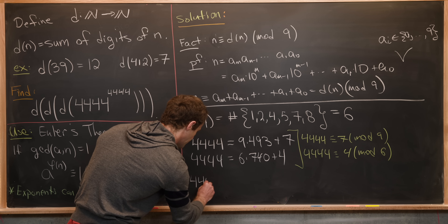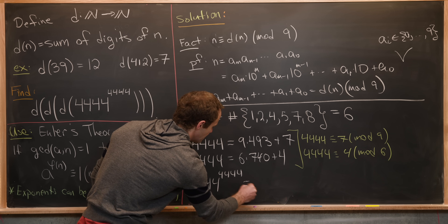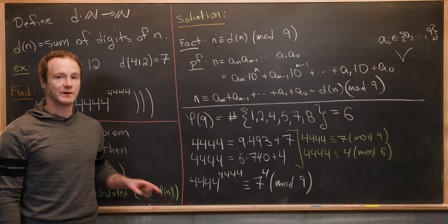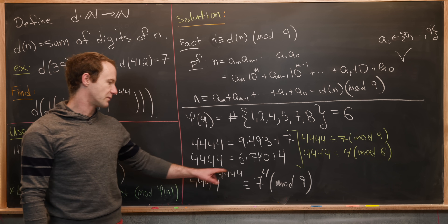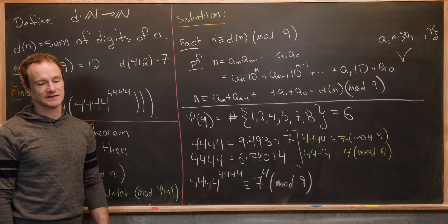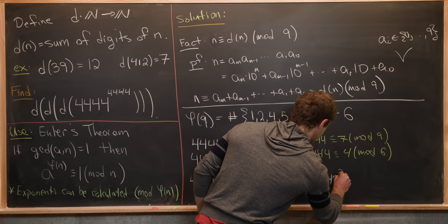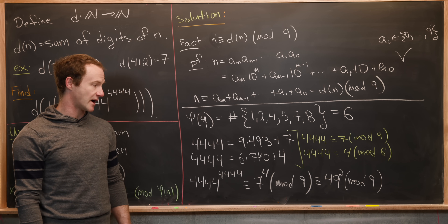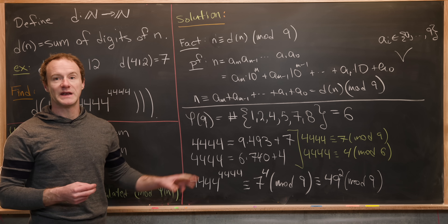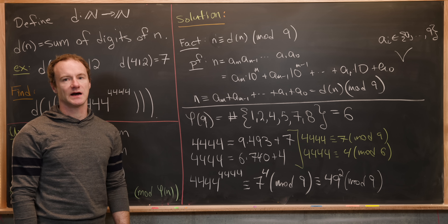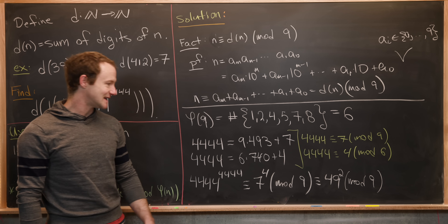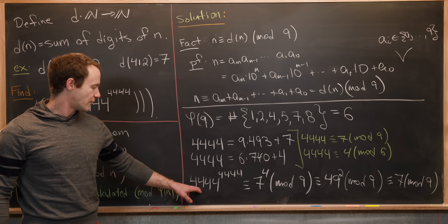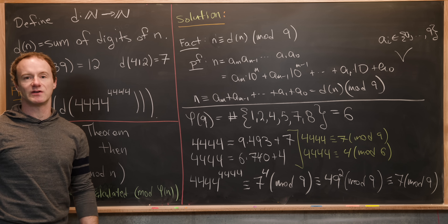We've reduced the base mod 9 and the exponent mod 6. Now 7^4 = (7^2)^2 = 49^2 mod 9. Since 49 ≡ 4 mod 9, we get 49^2 ≡ 16 ≡ 7 mod 9. So 4444^4444 ≡ 7 mod 9.